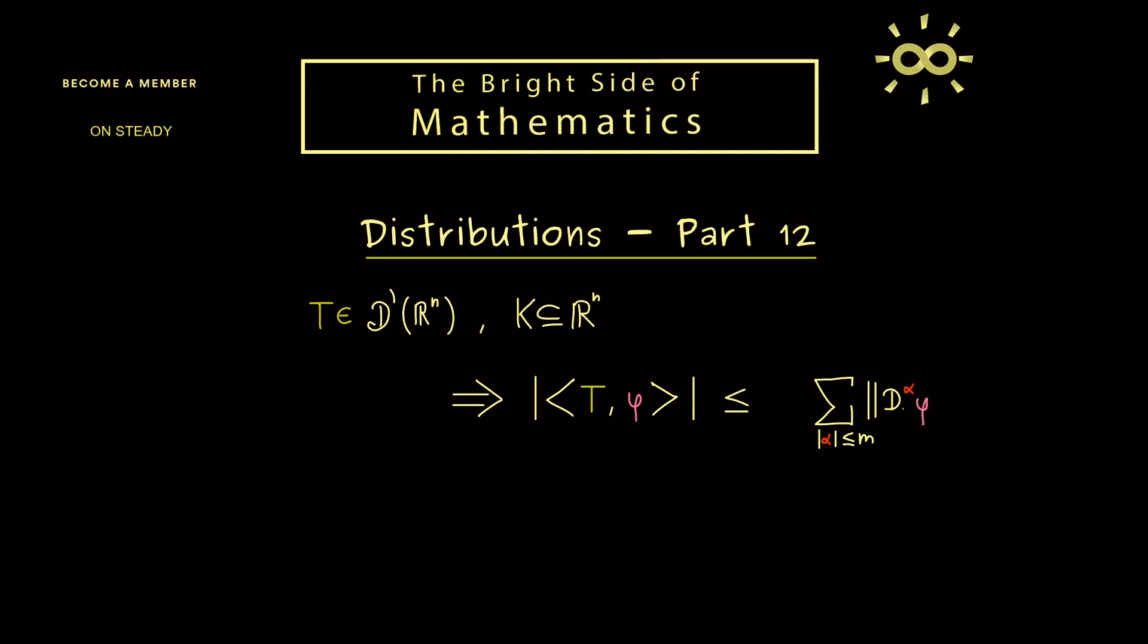You might recall we have discussed it in part 5, and there we have seen it's a sum of a supremum norm, namely the supremum norm of D^α φ. However, you also see we have a maximum order for the partial derivatives here, and we call this number m. And indeed, for a distribution T, such a number m always exists. And moreover, we also have a constant c involved which is in front of the whole sum.